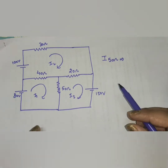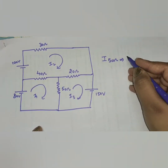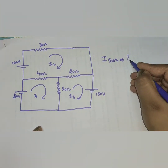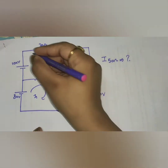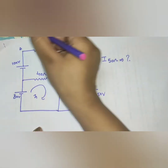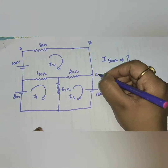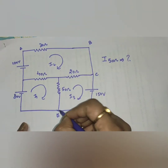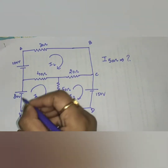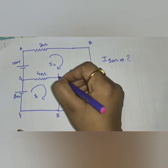Our next question: find the current in the 50 ohm resistance. To solve this, we mark nodes A, B, C, D, E, F, G, and H on the circuit.